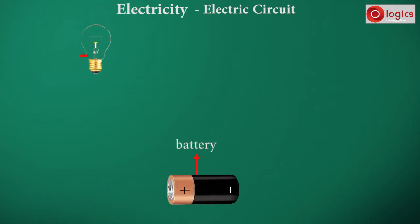Let us create a simple electric circuit. As you know, this is the battery, and this is the electric bulb. This is the positive terminal, and this is the negative terminal of the battery.